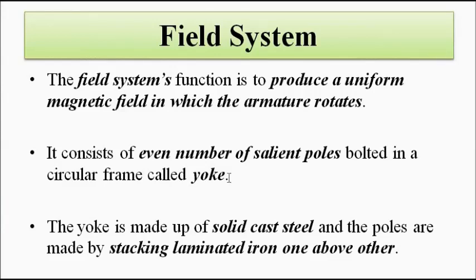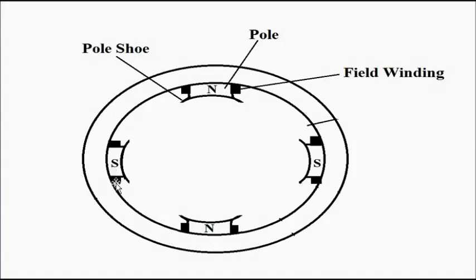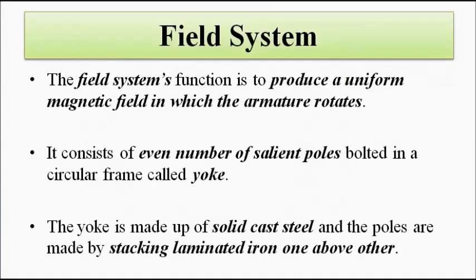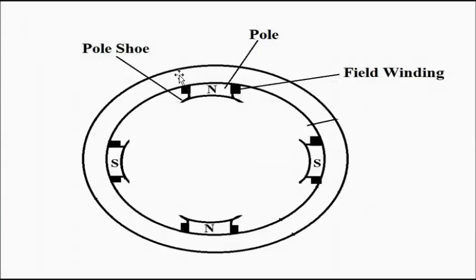In that circular frame we have an even number of poles bolted to it. The field system looks something like this — we have the circular frame called the yoke, and on this frame we have these poles bolted on it. The circular frame yoke is made of solid cast steel, and the poles are made of laminated iron pieces which are stacked one above the other. Around these poles the field windings are wound.